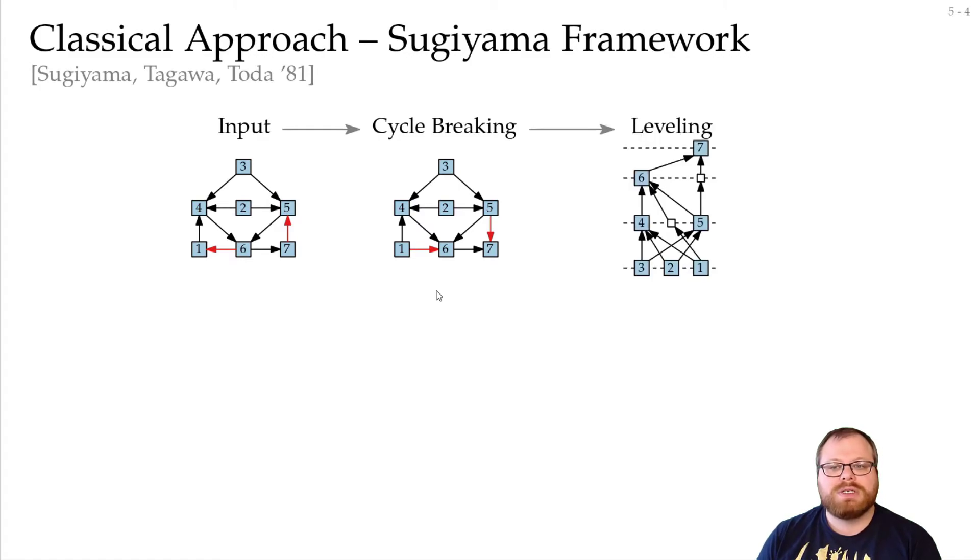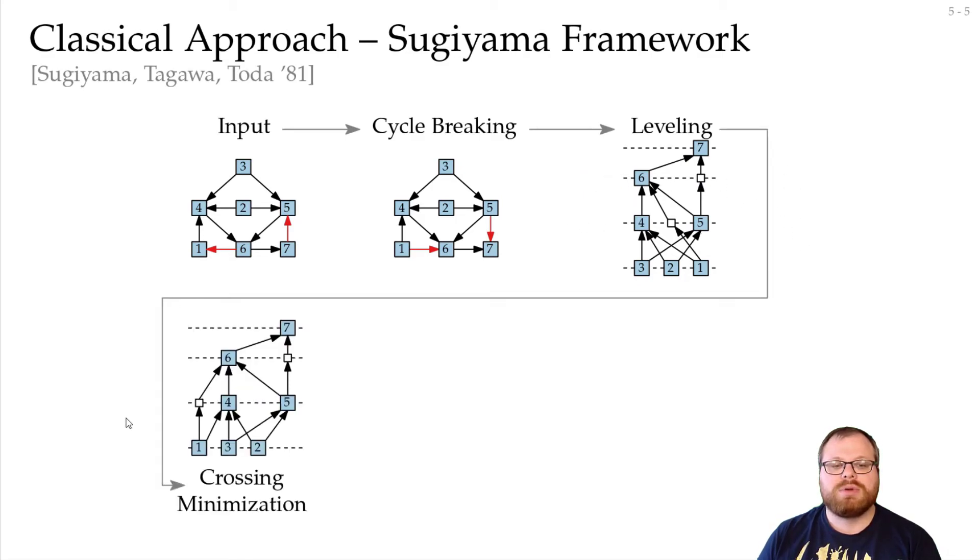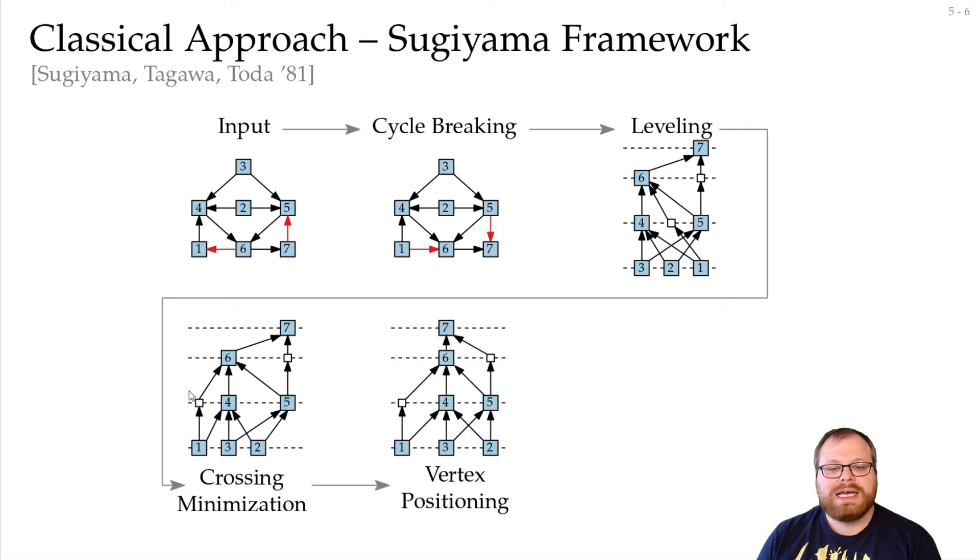Then, in the next step, we want to perform the leveling, so we want to figure out for every vertex, on which of these horizontal layers does it lie. And in the meantime, we place some dummy vertices, whenever an edge is too long, that it spans more than two layers. After we fix this leveling, so we fix the y-coordinate of all the vertices, we want to minimize the number of crossings. And after we're done with that, then we place the vertices in these layers, so that we get the good separation, and finally get a nice drawing of the edges.